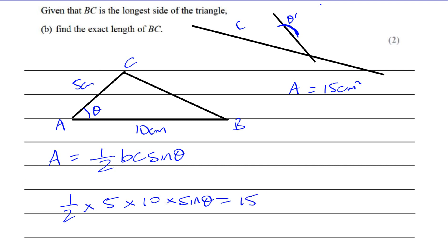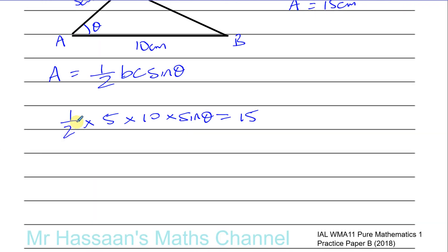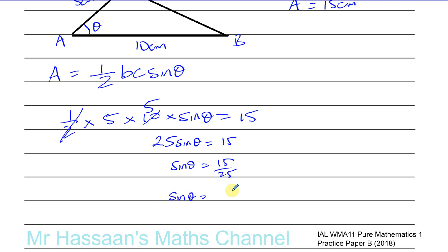The only unknown is sine theta. We have ½ × 10 = 5, and 5 × 5 = 25, giving 25 sin θ = 15. Therefore sin θ = 15/25, which simplifies to 3/5.